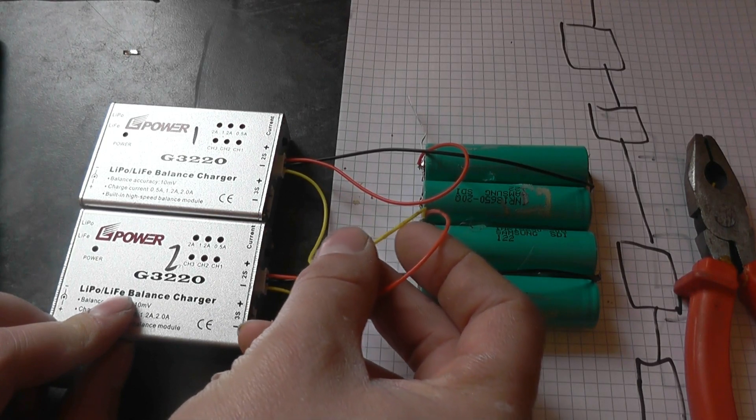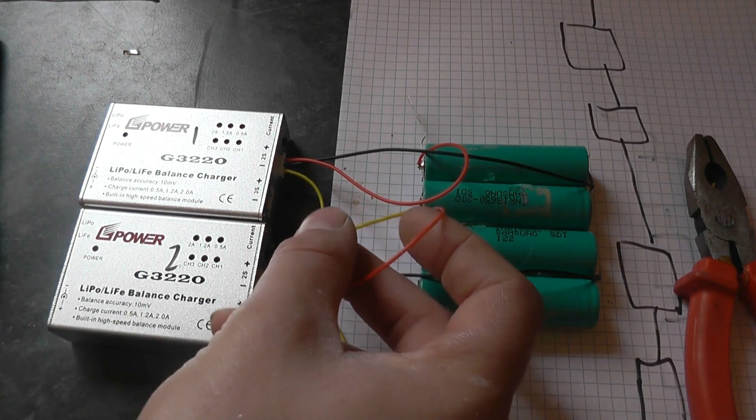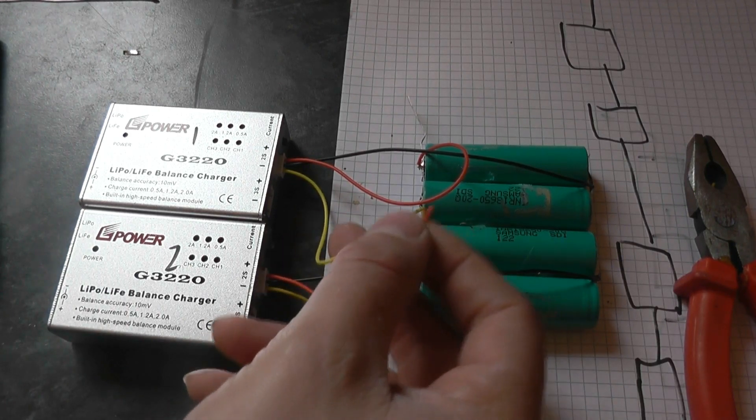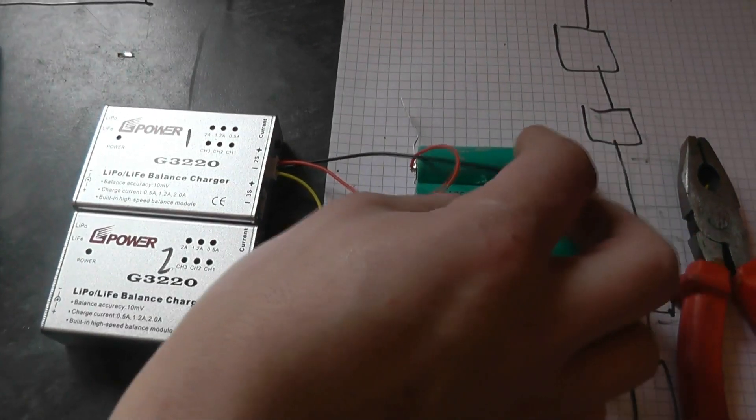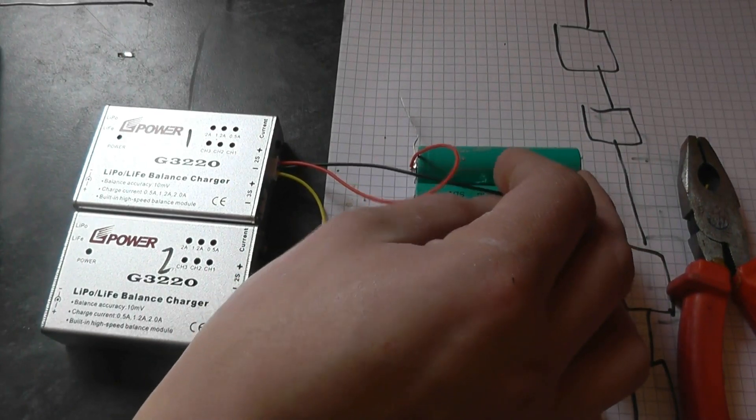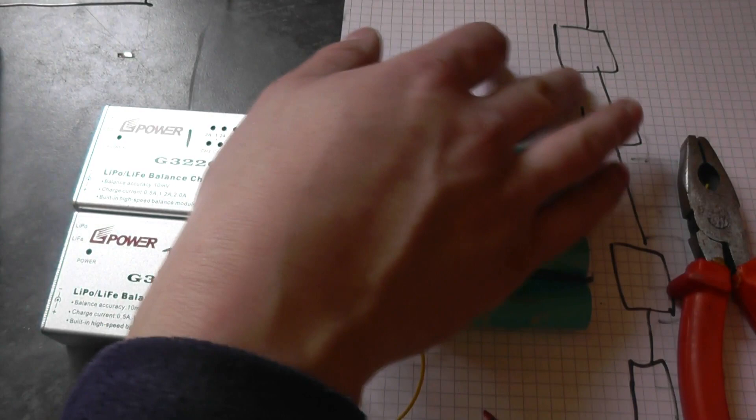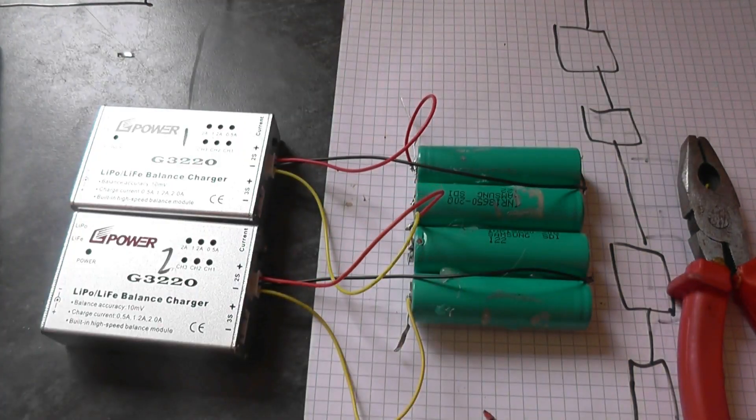Oh dear, this is terrible, isn't it? And the yellow negative of the first pack go into the black middle and the red top positive. So, yellow, black, red.